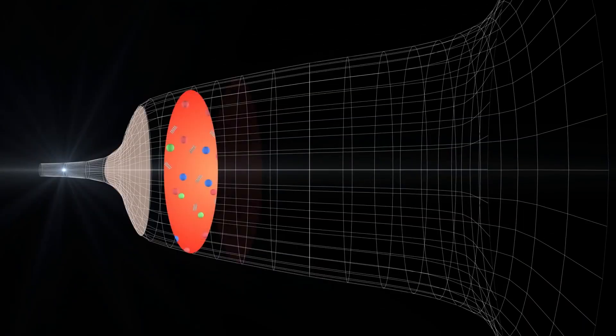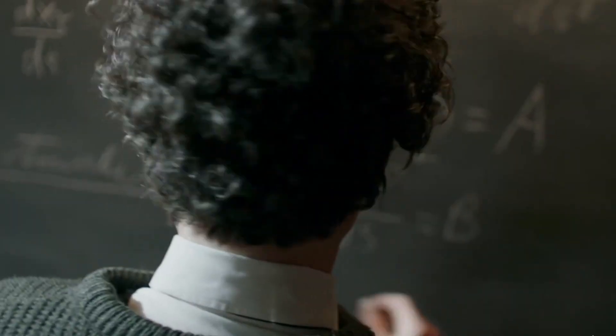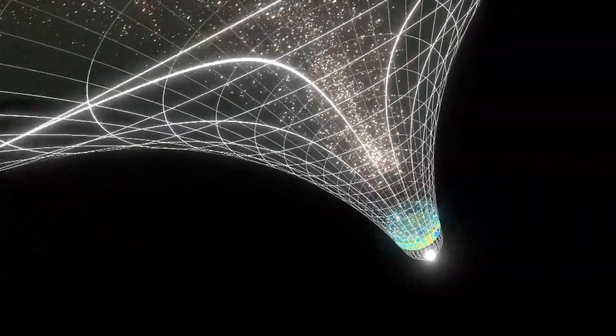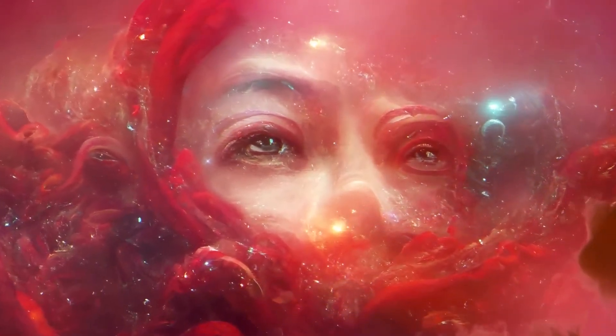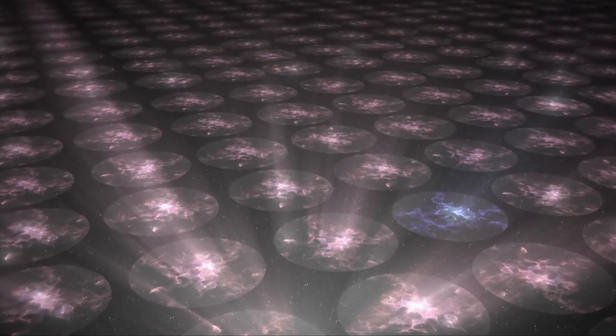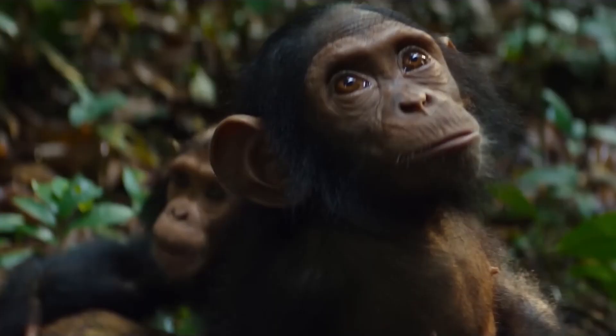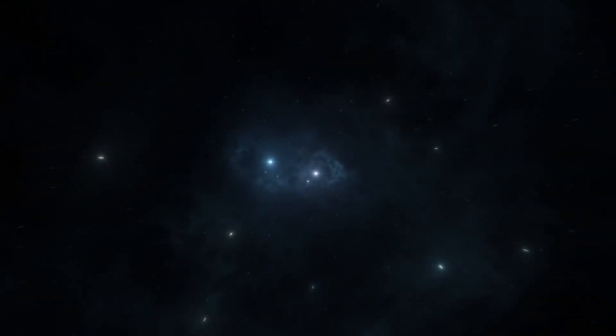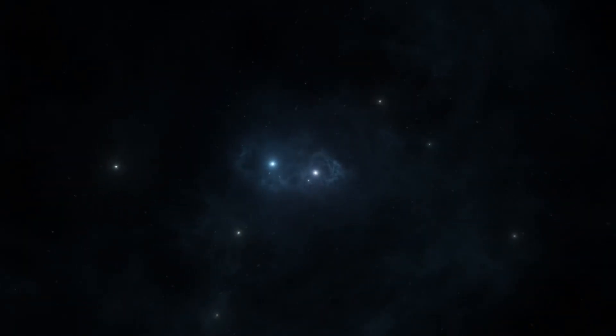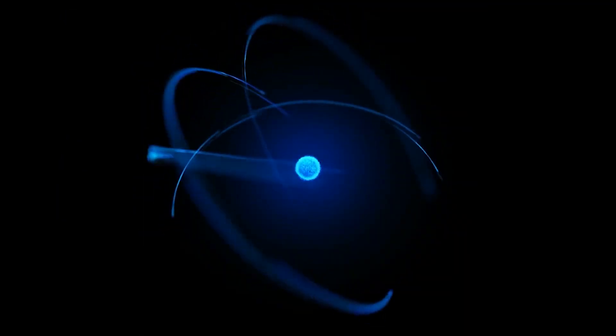This could explain why our universe has certain characteristics, particularly those that are difficult to explain using fundamental physics, such as dark matter or the cosmological constant. According to some scientists, the emergence of intelligent species capable of making cosmic observations is the most persuasive proof for the multiverse. Certain aspects of our cosmos look distinctive and necessary for supporting life when regarded in this perspective, such as star longevity, carbon abundance, light availability for photosynthesis, and the stability of complex nuclei.